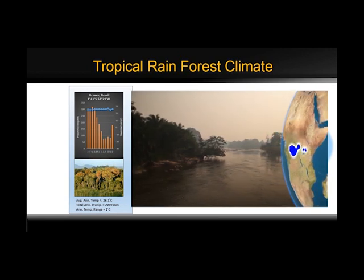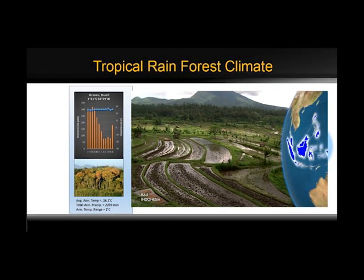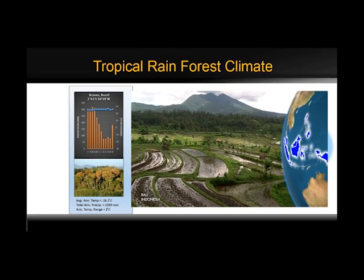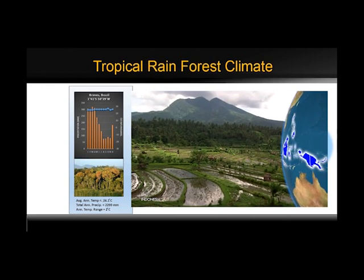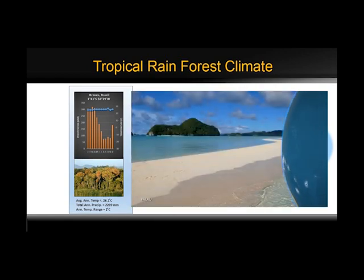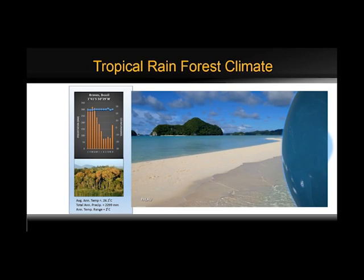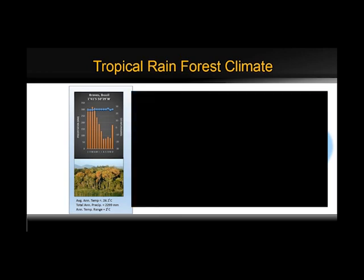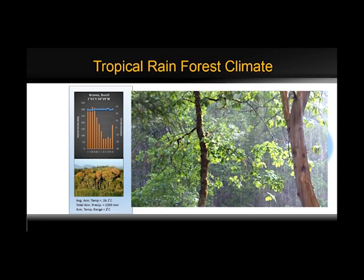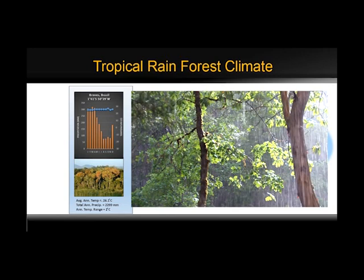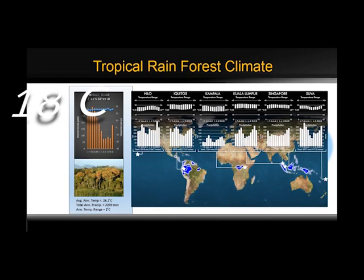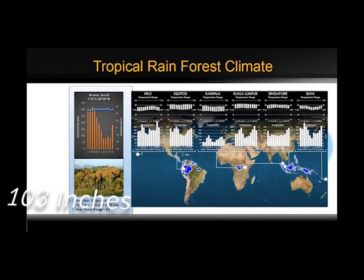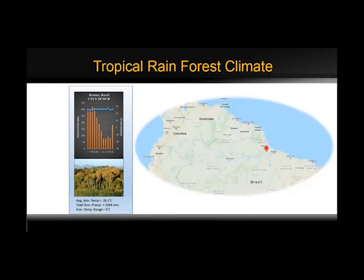Humidity is between 77 and 88%. High surface heat and humidity cause cumulus clouds to form early in the afternoons, most every day. The climate on the eastern side of the continents is influenced by maritime tropical air masses. These air masses flow out from the moist western sides of the oceanic high-pressure cells and bring lots of summer rainfall. Summers are warm and very humid, and it also rains a lot in winter. The average temperature is 18 degrees Celsius, and annual precipitation is around 103 inches.